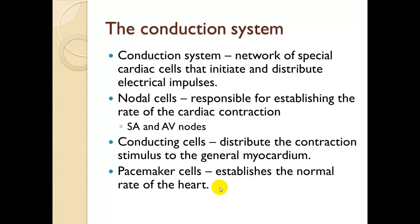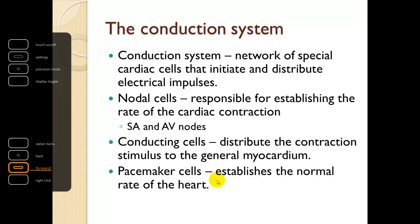The conduction system is a network of special cardiac cells that initiate and distribute electrical impulses. We have nodal cells, responsible for establishing the rate of cardiac contraction — the sinoatrial and atrioventricular nodes. We have conducting cells, which distribute the contraction stimulus to the general myocardium. And we have pacemaker cells, which establish the normal rate of the heart. All of these cell types are working every time the heart beats.